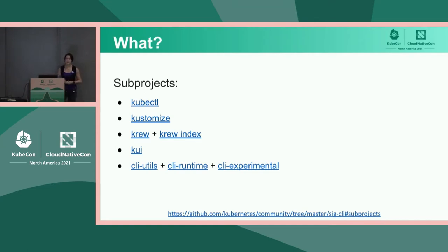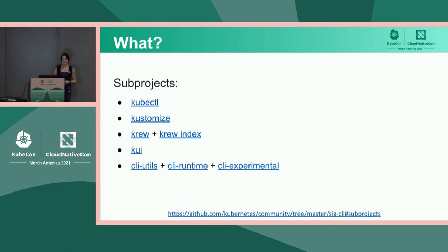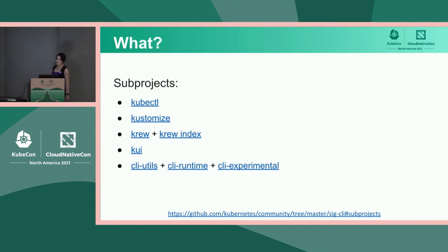Our latest addition is a tool called CUI, which is a framework for adding graphical elements to command-line tools. It was recently donated by IBM, and we're very excited to have the CUI project as part of SIG CLI. In addition to that, we own the CLI utils, CLI runtime, and CLI experimental codebases, which contain more tools and experiments around CLI packages.